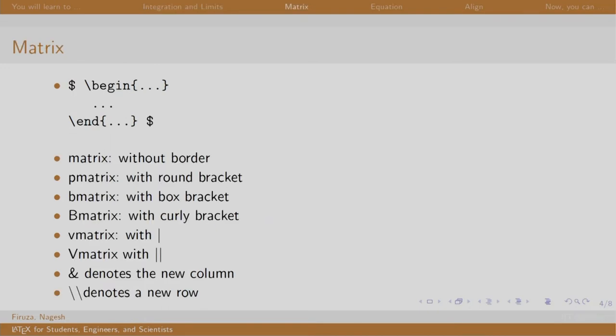You write a matrix using the environments given below. For example, matrix environment will display a matrix without a border, while P matrix will display with a round bracket, etcetera. Let us try out the addition of two matrices.